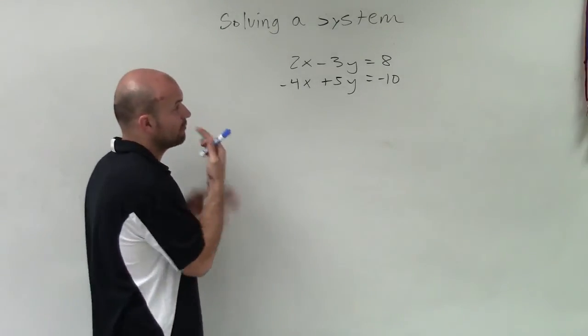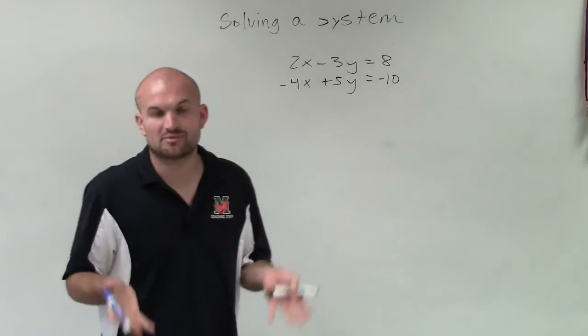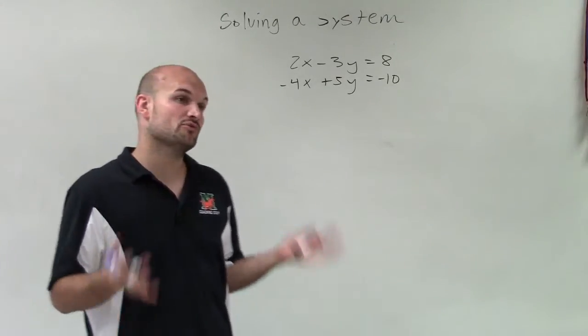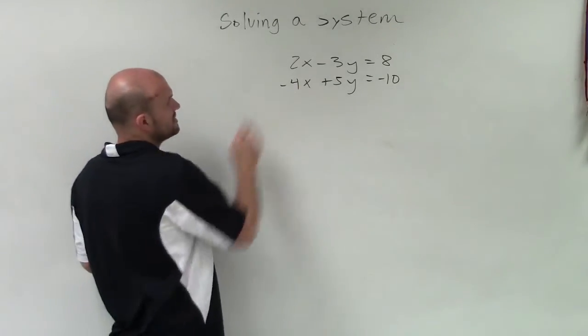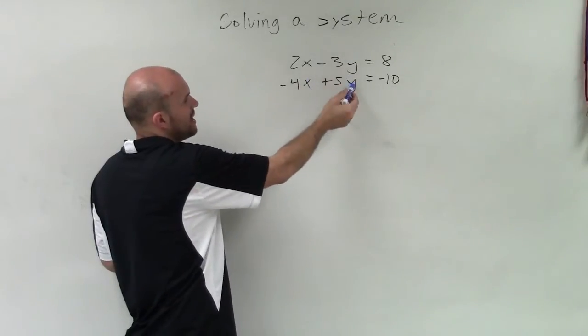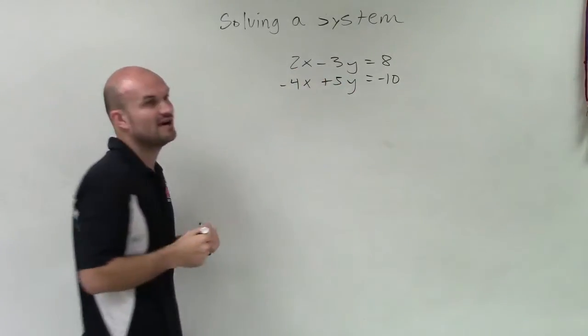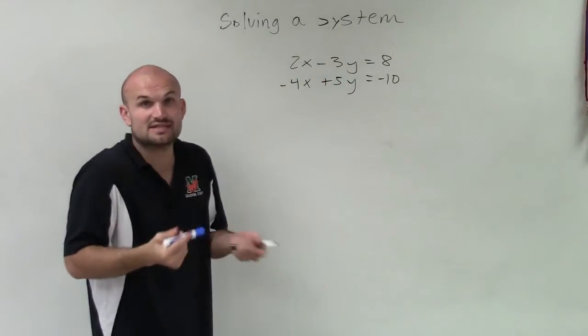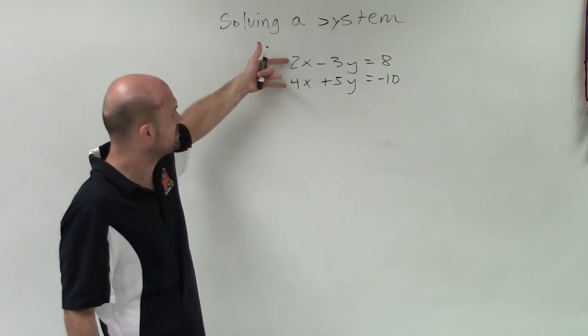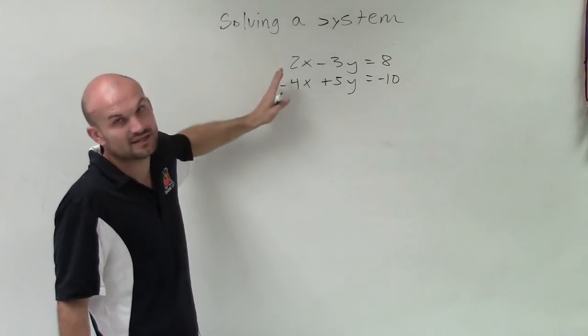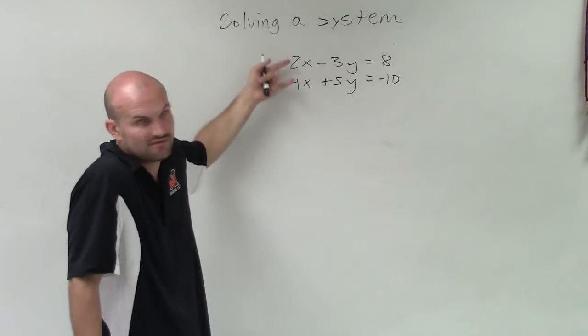To do that, I want to make sure that at least one of my variables are going to have the same coefficient. Doesn't matter if they're both positive or both negative. So I see that between the x's and the y's, the x's are going to be able to find the easiest LCM, or least common multiple between their coefficients, where the least common multiple between 2 and 4 is 4.